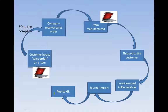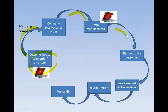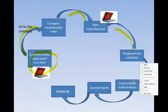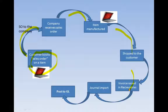The same process is now explained in pictorial form. The process starts from the customer booking the sales order on a particular item, say a laptop. The company receives the sales order, the item is manufactured and shipped to the customer's location, an invoice is raised on the item, the invoice is paid by the customer, a Journal Import program is run, and finally the amount is recognized in the General Ledger.